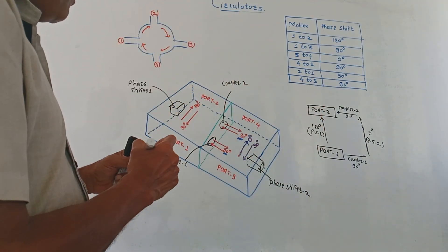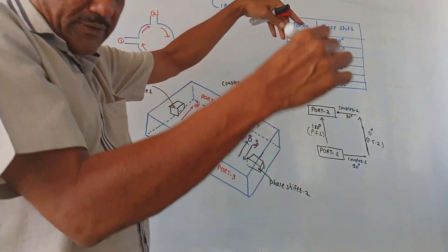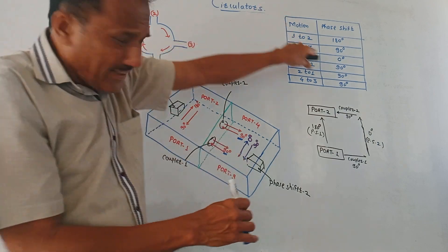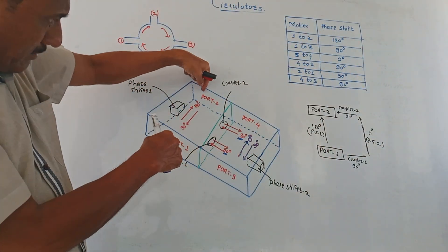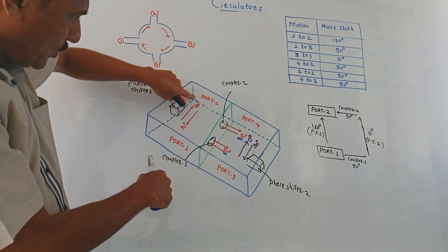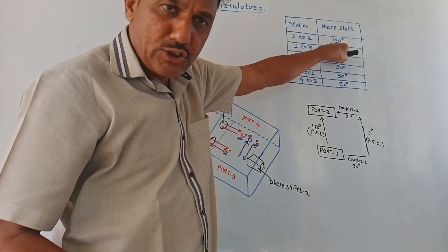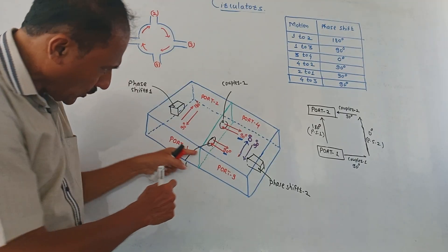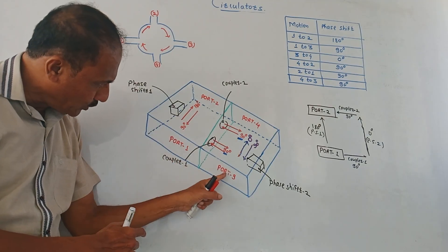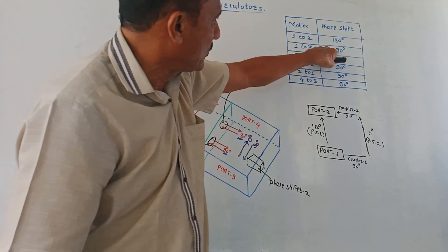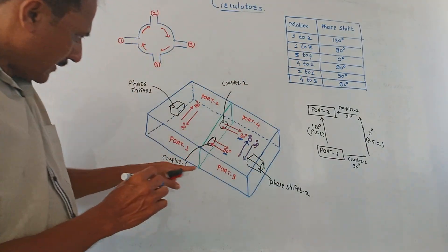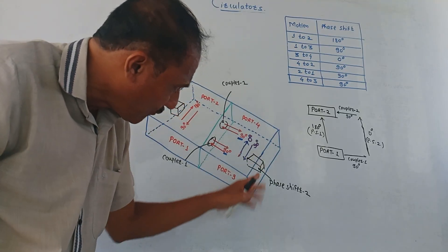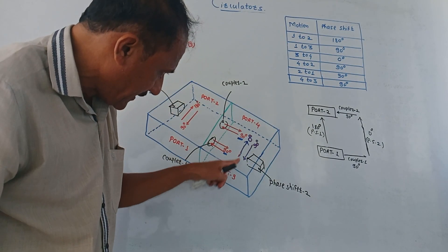This table shows the different phase shifts between different ports. When moving from port 1 to port 2, the phase shift is 180 degrees. From port 1 to port 3, the phase shift is 90 degrees. From port 3 to port 4, the wave passes through phase shifter 2 which produces 0 degrees in the forward direction. From port 4 to port 2, coupler 2 produces a phase shift of 90 degrees.